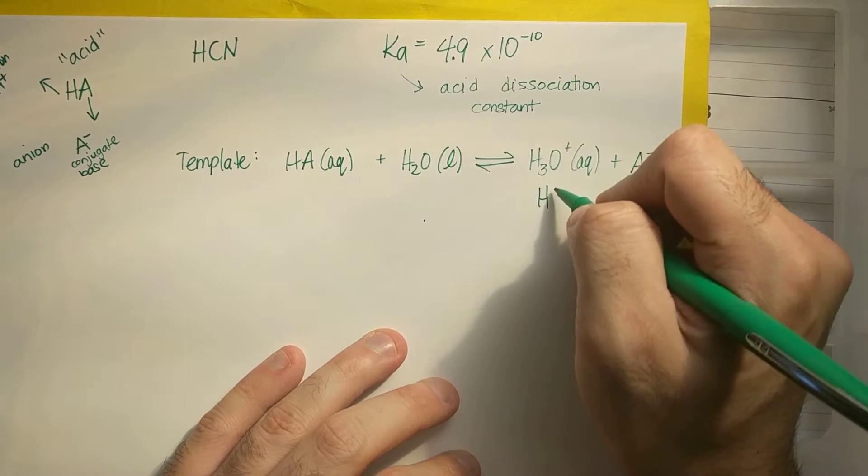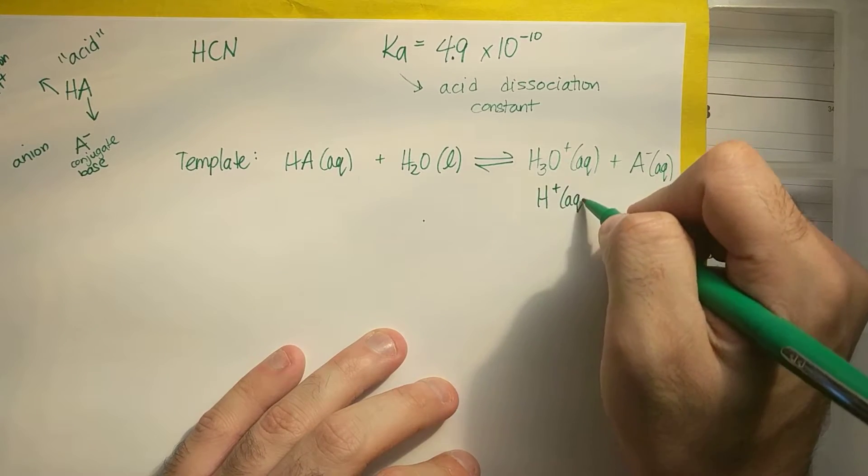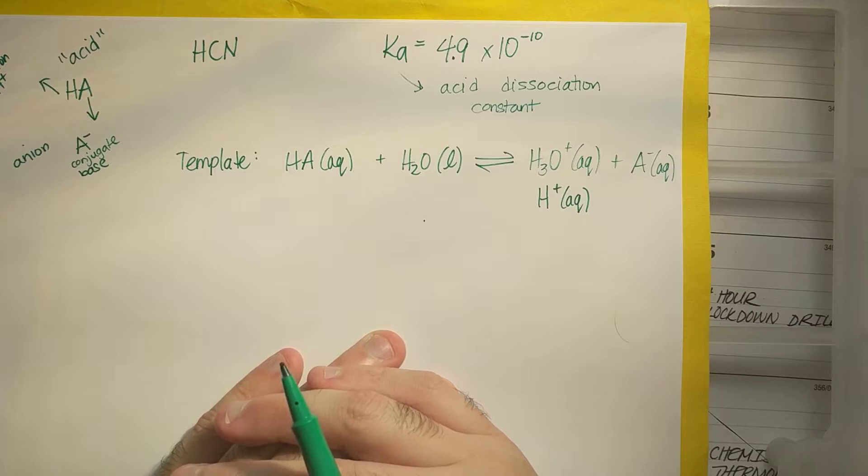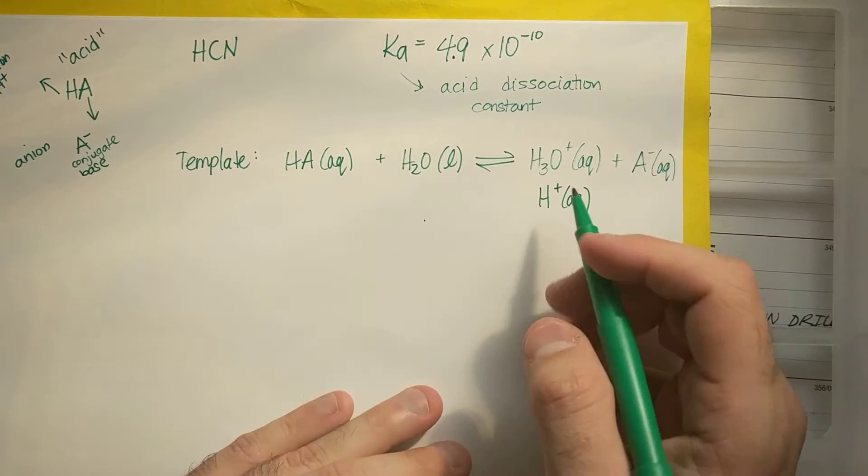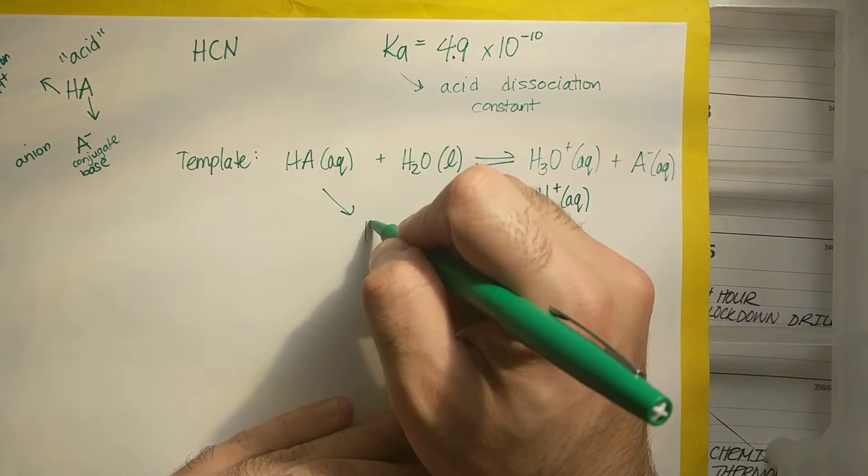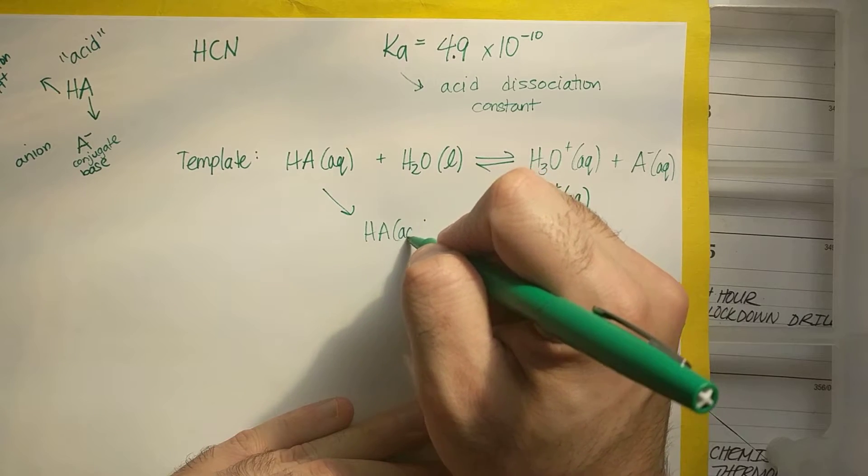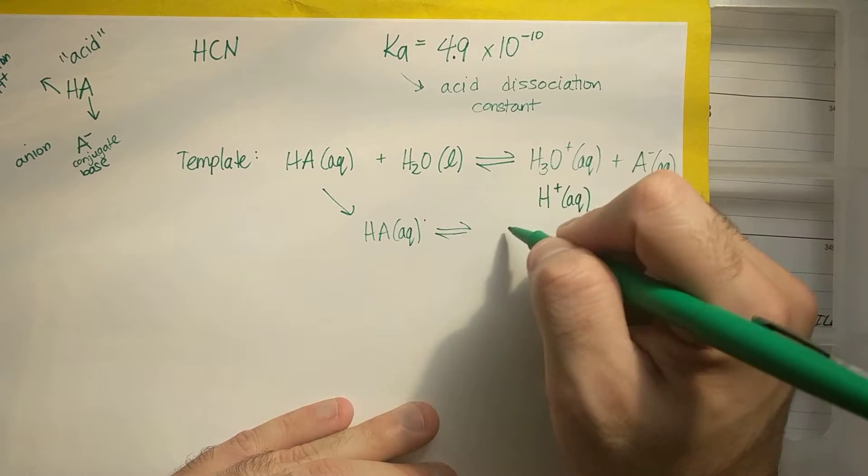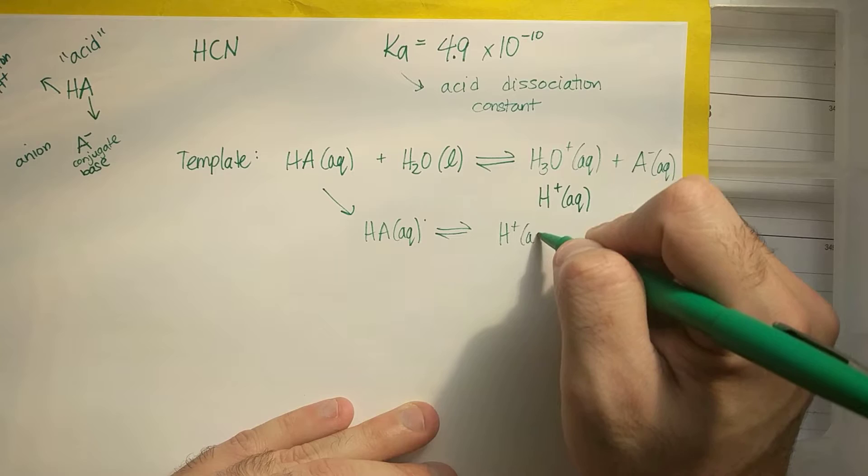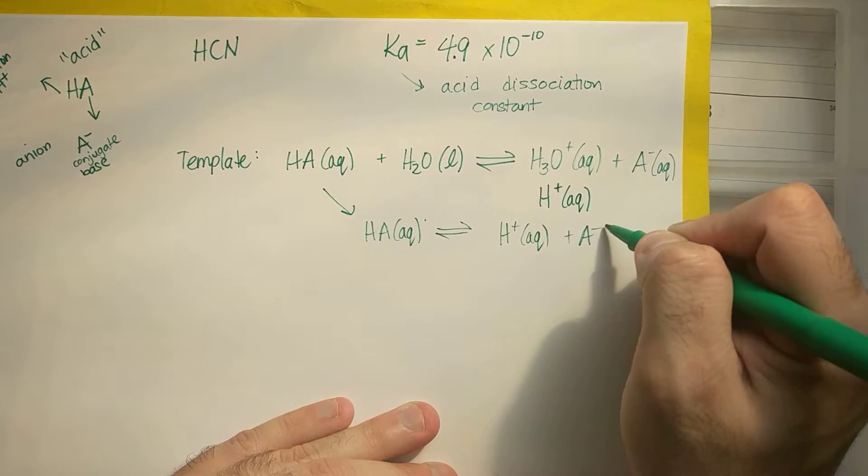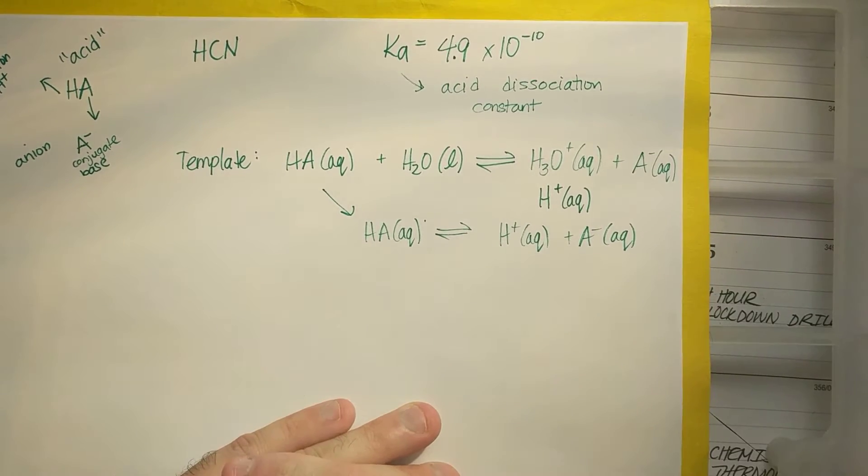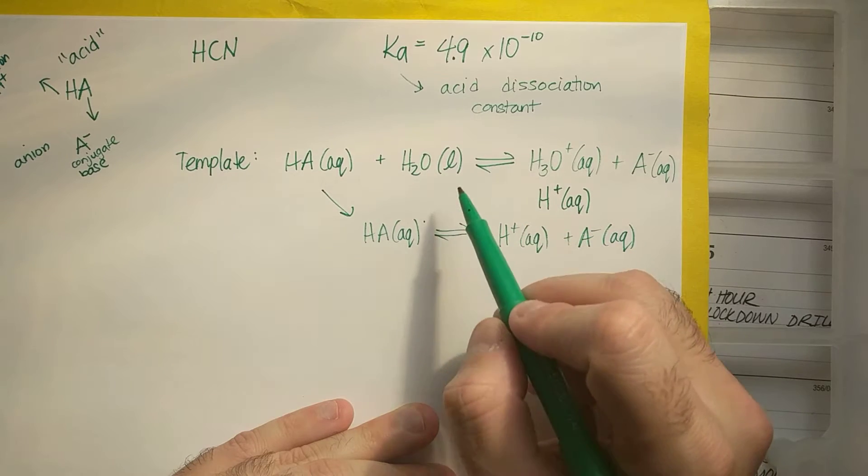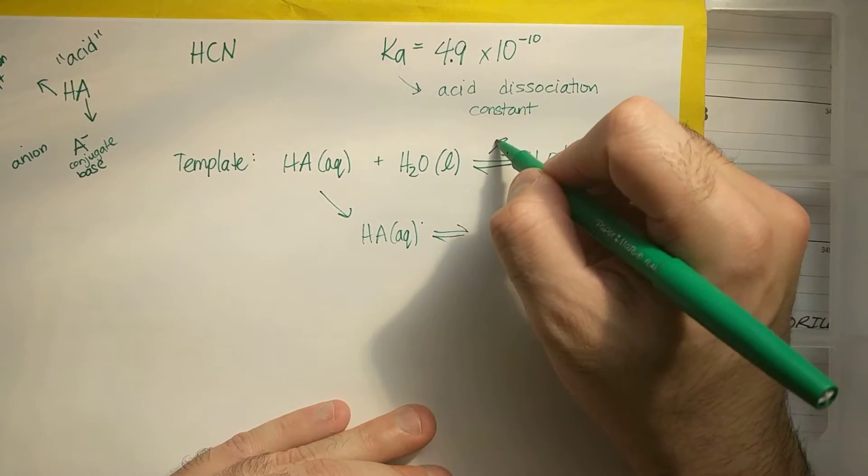That is the in general formula or the template. Now H3O plus can also be written as H plus. Now if I want to write it as H plus, I'd have to rewrite this like this. HA aqueous, H plus aqueous plus A minus aqueous. Both of these are the same. By the way, notice how they're in equilibrium.